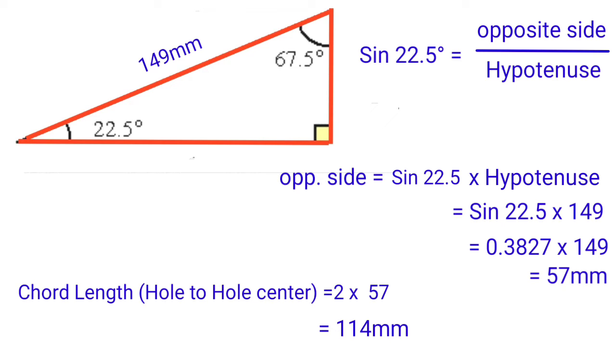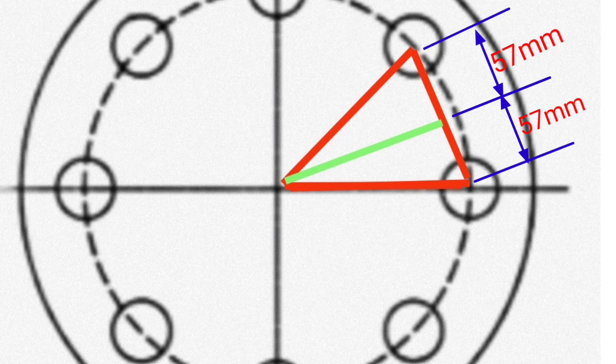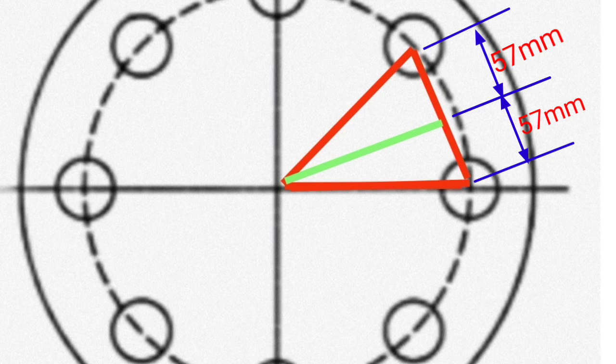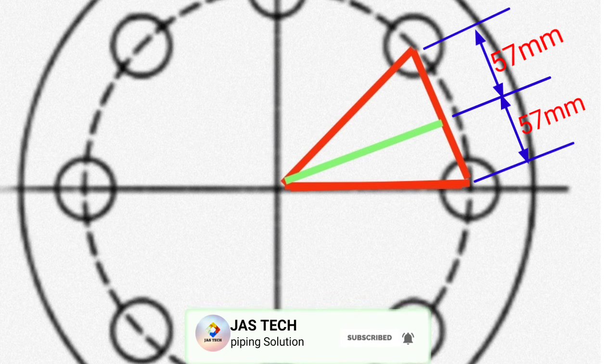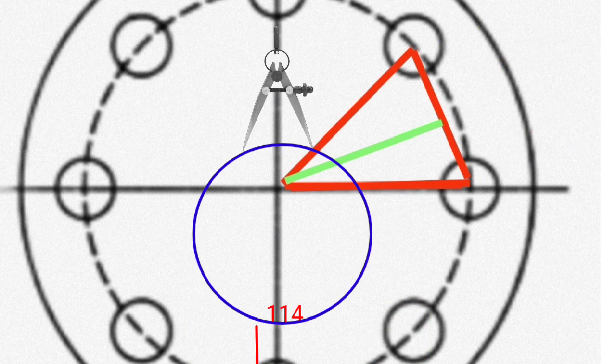So chord length equals 2 into 57. The answer is 114 mm. That is the chord length - two opposite side values, each one 57 mm. So 2 into 57 is 114 mm.